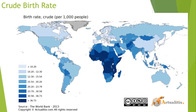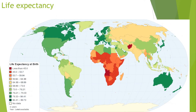This map shows crude birth rates, and you can see they are highest in the least developed countries and lowest in the most developed countries. The map of life expectancy shows a similar pattern: in the least developed countries, life expectancy — the average number of years a newborn infant can expect to live at current mortality levels — is the lowest.